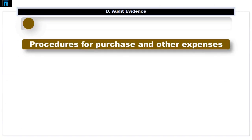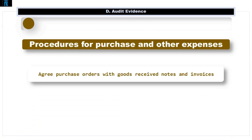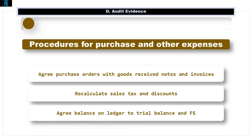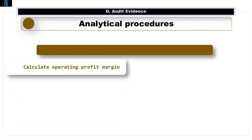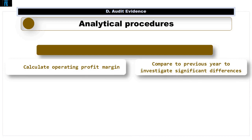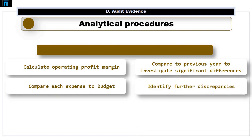Analytical procedures for revenue include comparing the balance to the previous year, calculating and comparing gross profit margins, and comparing to budgeted figures. Purchase and other expense balance procedures include inspecting purchase orders and agreeing to goods received notes and invoices, recalculating sales tax and discounts, and agreeing the ledger balance to the trial balance and financial statements. Analytical procedures include calculating the operating profit margin to compare to the previous year and comparing each expense account to budget.